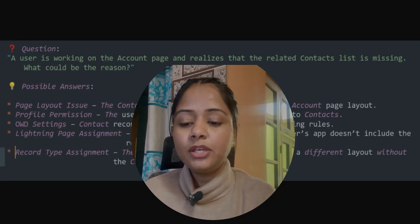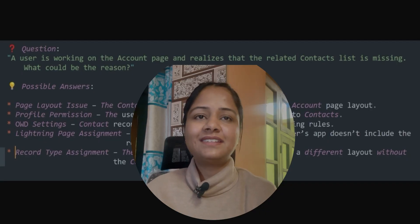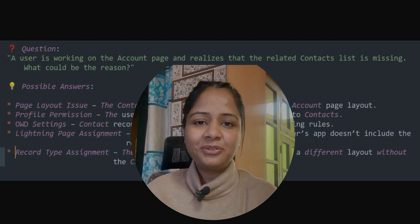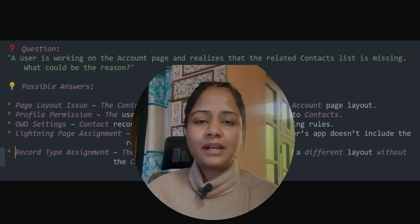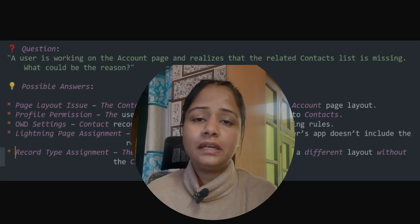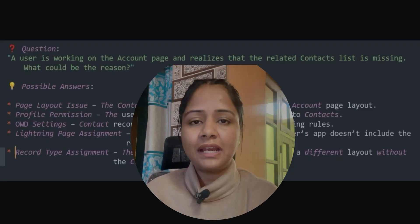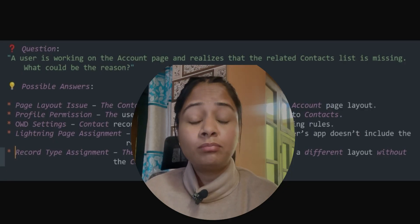Today's question is: a user is working on the Account page and realizes that the related Contact list is missing. Now, Account and Contact are common objects in Salesforce, and Account is the parent while Contact is the child. So on the Account page, we should have the related list of its child — the Contact — but that is missing.